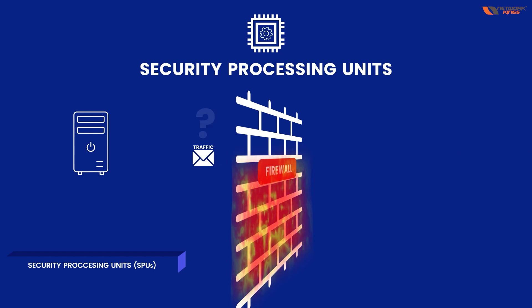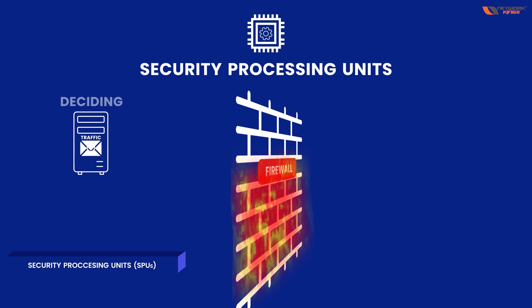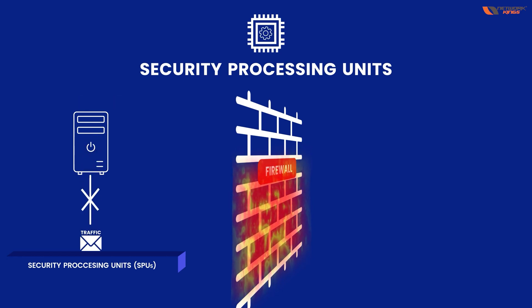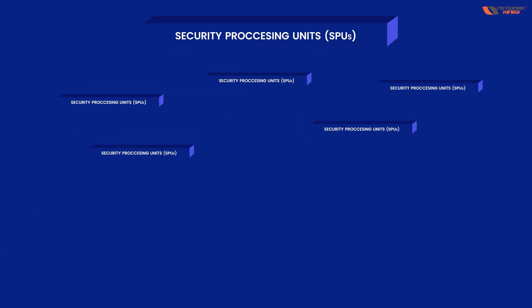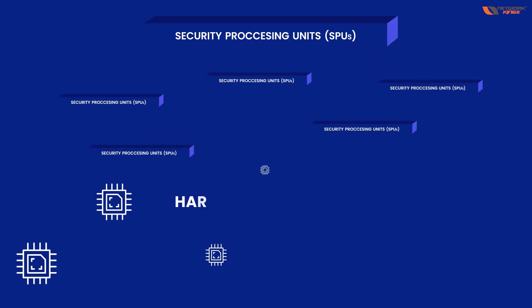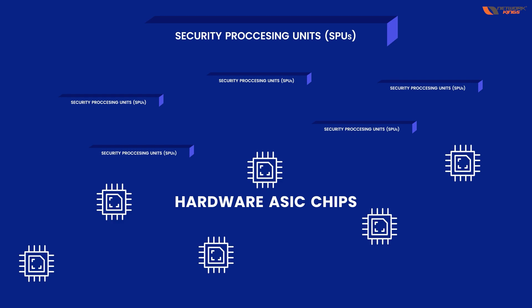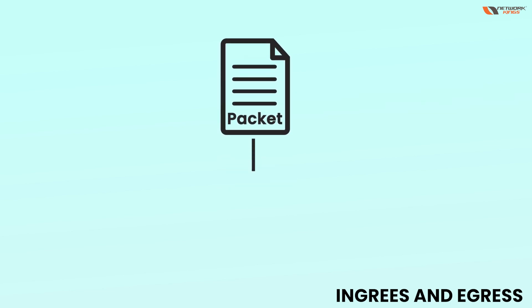Whatever traffic enters the FortiGate firewall first goes to the CPU. The CPU then decides whether to offload that traffic to the Security Processing Unit or not. In all cases, there are different SPUs — hardware ASIC chips — that handle different kinds of traffic and the packet flow.